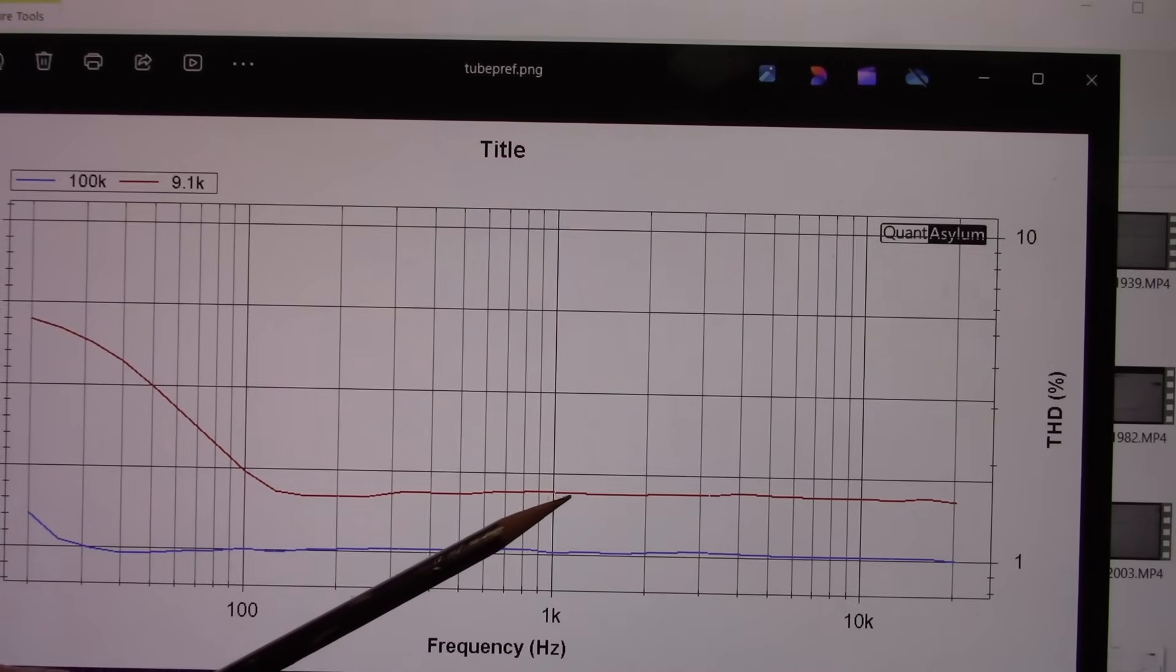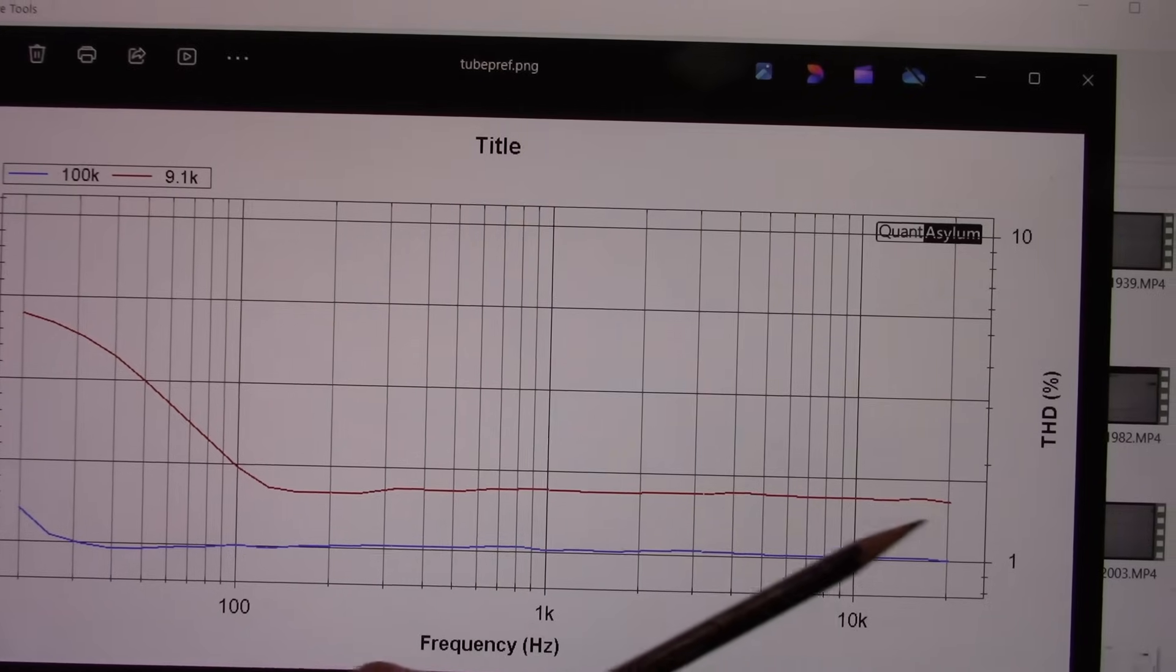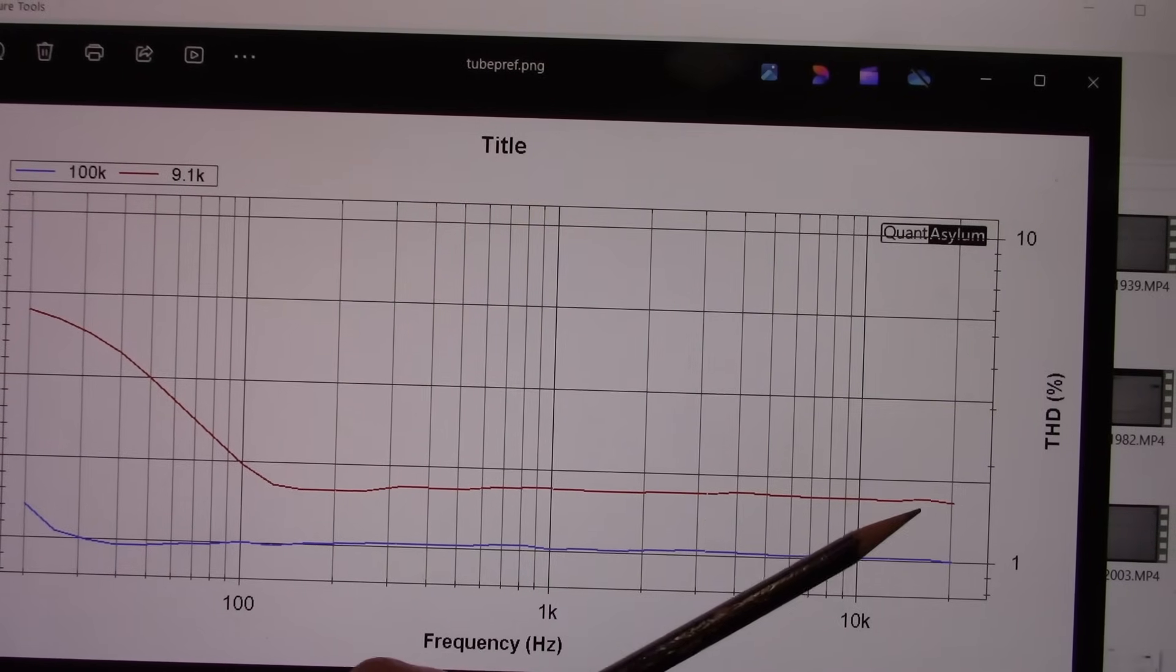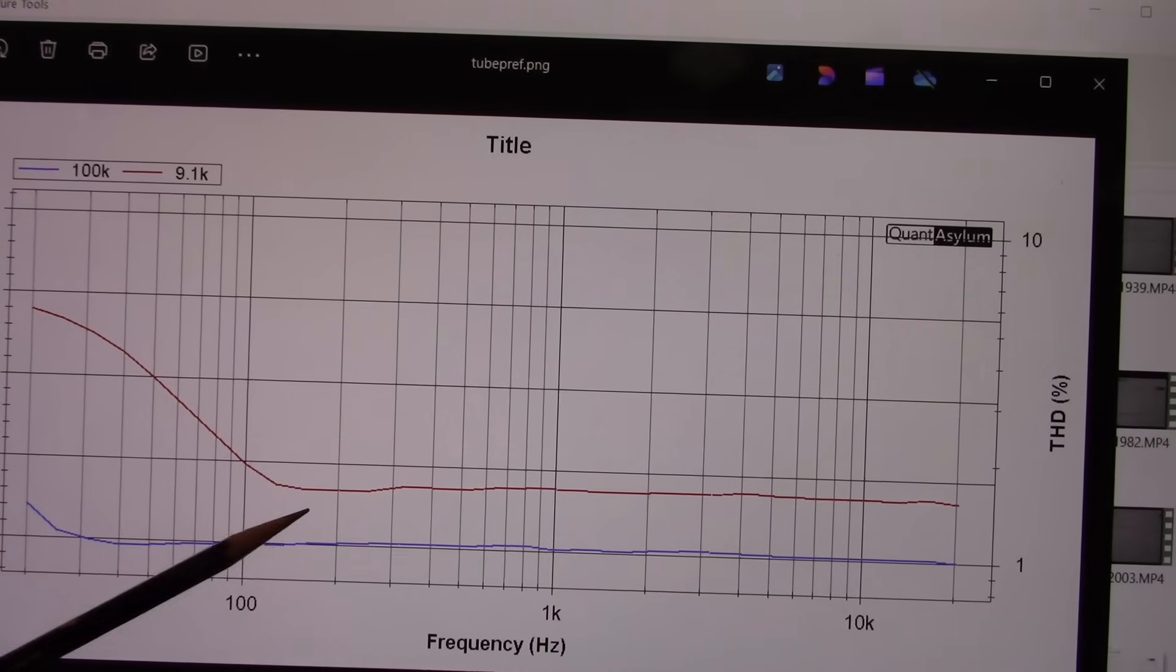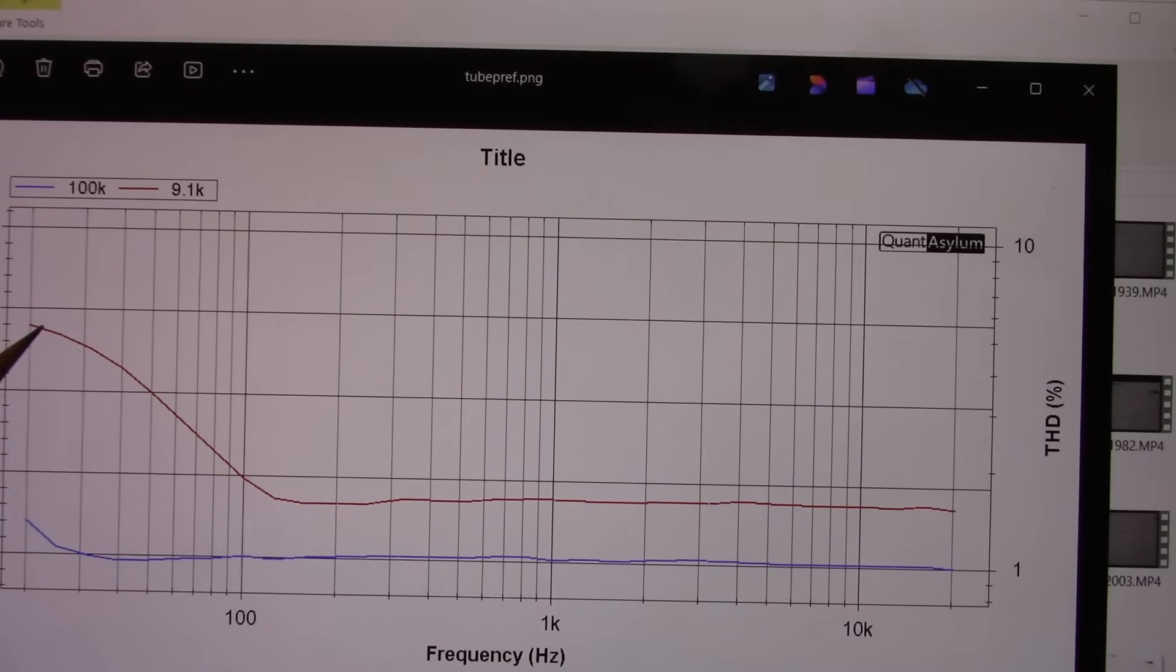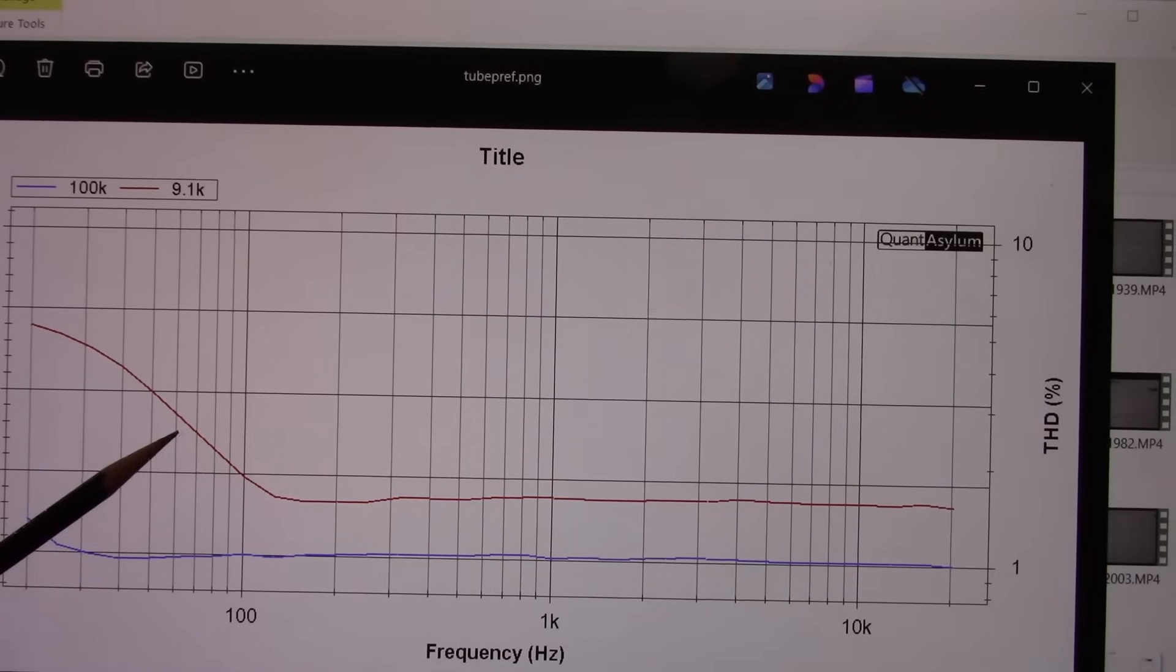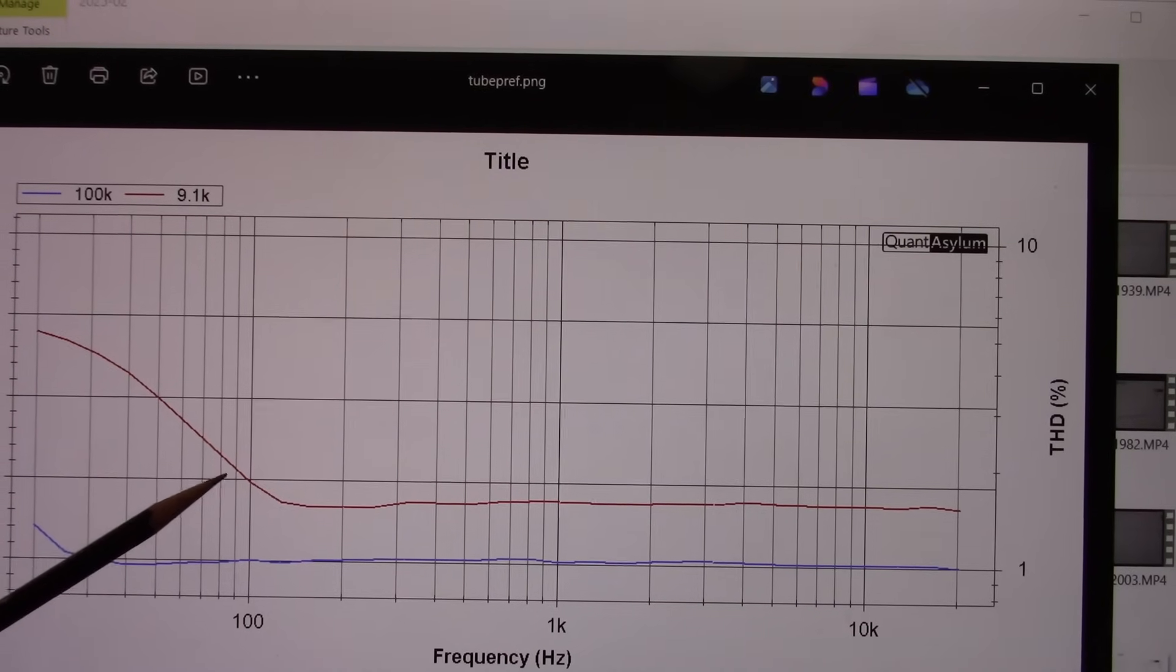And at 9.1k load on the output, you see the distortion went up to 1.5%, and it stayed pretty flat, except at the lower end of the frequency range. And I think that's due to the output coupling capacitor.